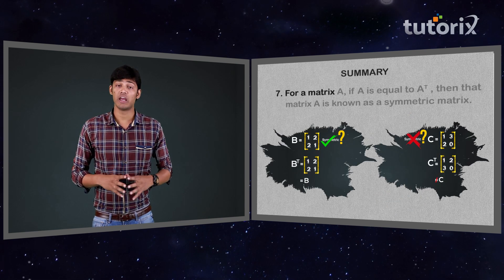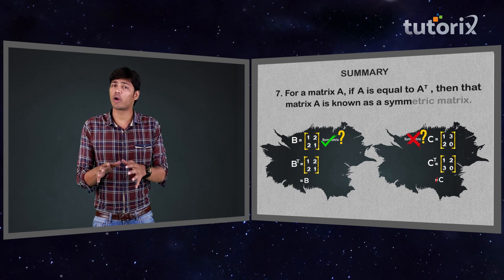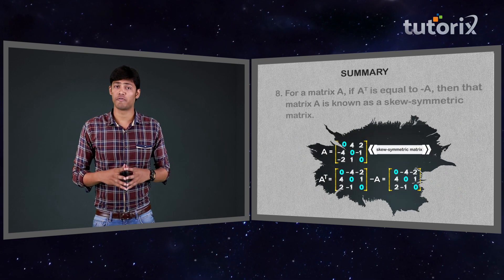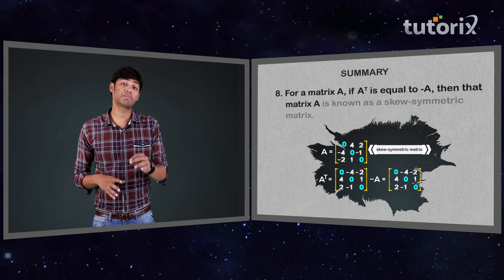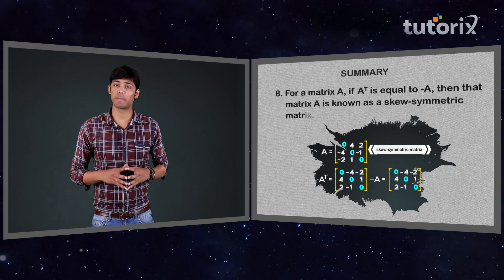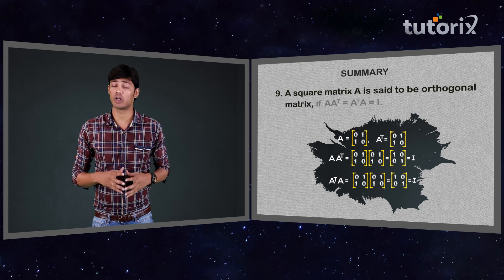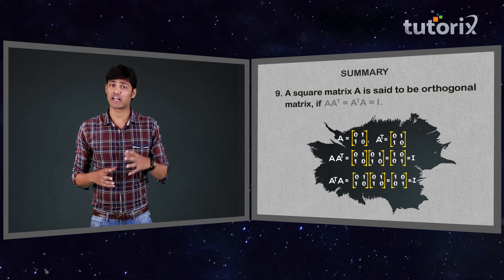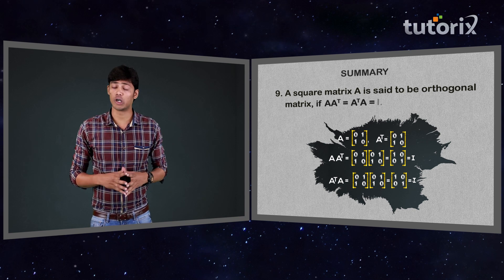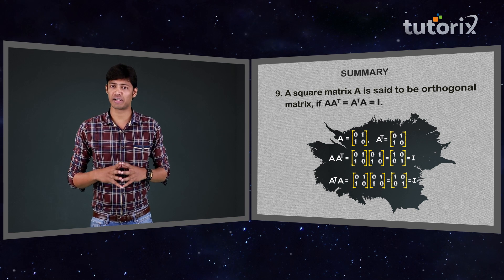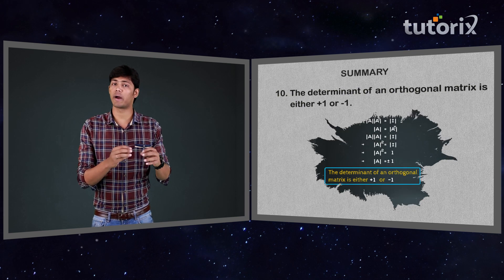The determinant of a matrix and its transpose are always equal. For a matrix A, if A is equal to A transpose, then that matrix A is known as a symmetric matrix. A square matrix A is said to be an orthogonal matrix if A into A transpose is equal to A transpose into A, and it is also equal to I, the identity matrix. The determinant of an orthogonal matrix is either plus one or minus one.